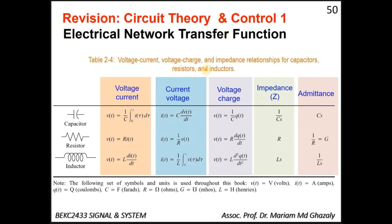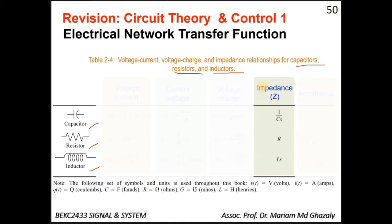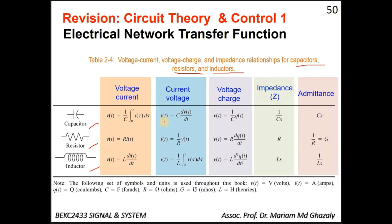Let's look at this table. It shows the voltage-current, voltage-charge, and impedance relationships for capacitors, resistors, and inductors. We are going to focus directly on using the impedance Z. For a capacitance the impedance is 1 over Cs, for resistance it is R, and for inductance it is Ls.